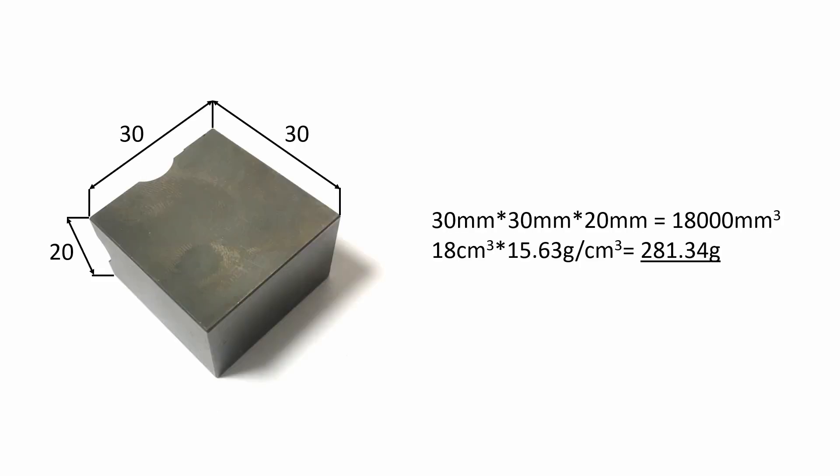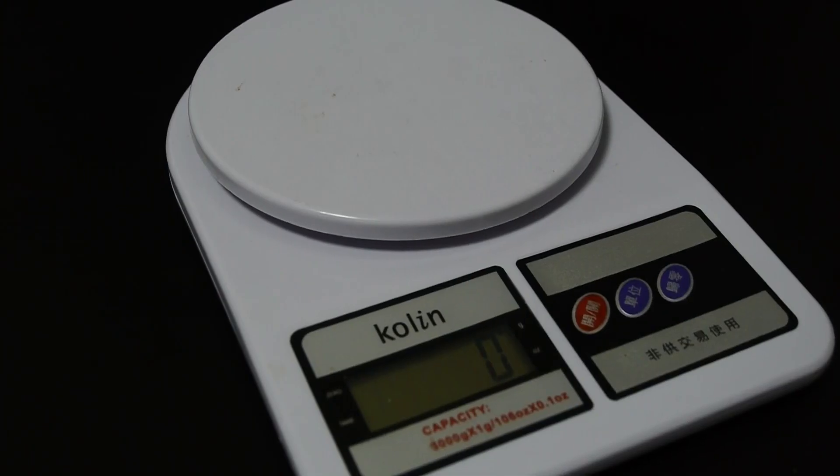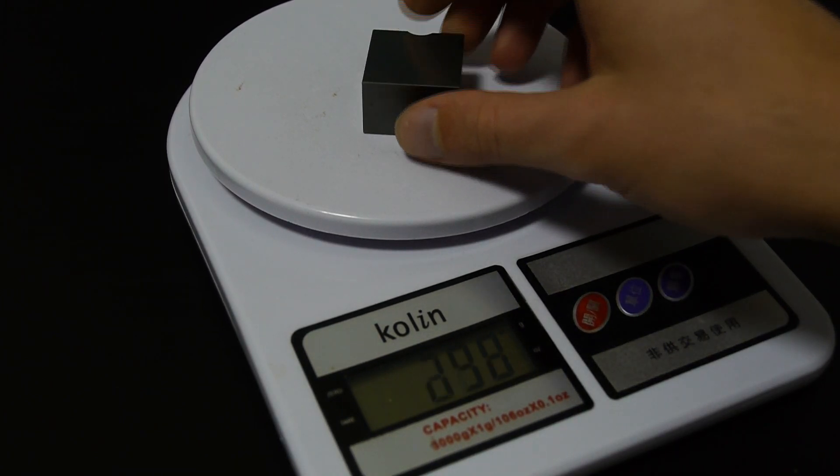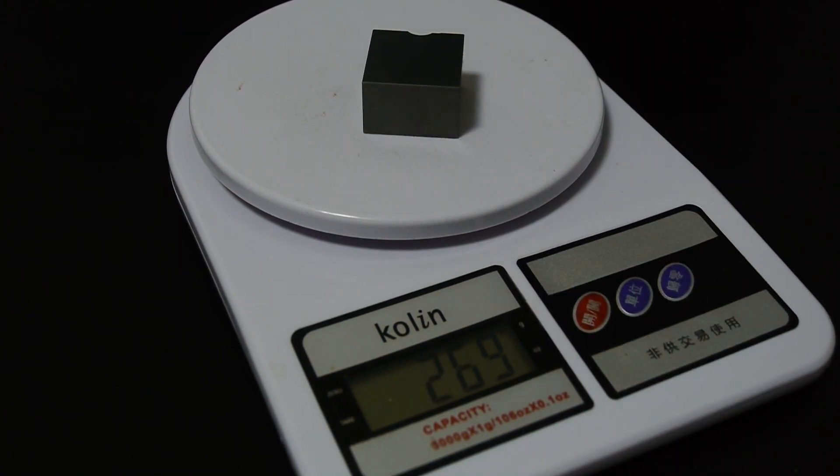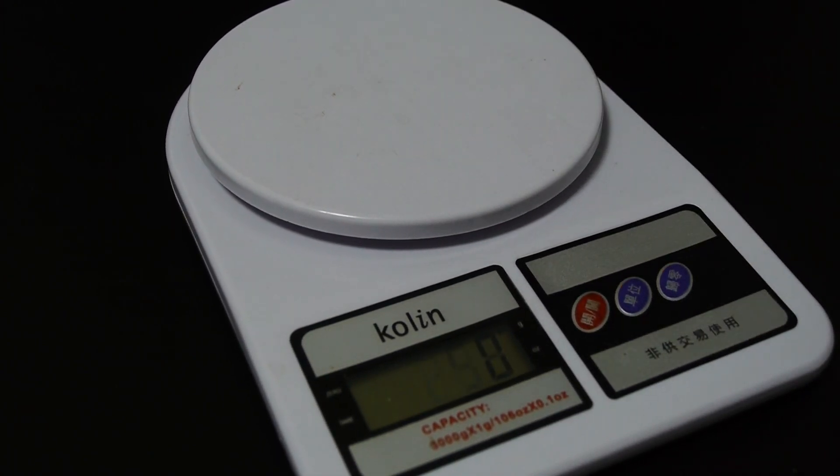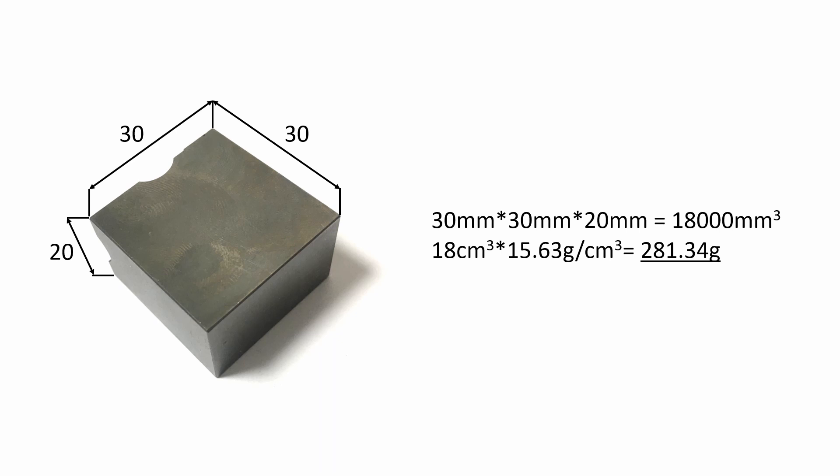To prove the material we have here is really tungsten carbide, we can calculate the theoretical mass which would be 281 grams, and compare it to the actual weight of the block. We see the calculated 281 grams are close to the measured 269 grams. The weight difference most likely comes from the fact that one side of the block is already machined.